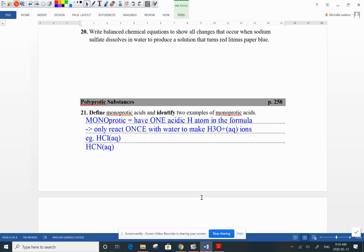Mono, one. So when we have a monoprotic acid, it has one acidic hydrogen atom in the formula. Why? Because it can react one time with water to make hydronium ions. So hydrochloric acid, look at the formula, 1H, monoprotic.